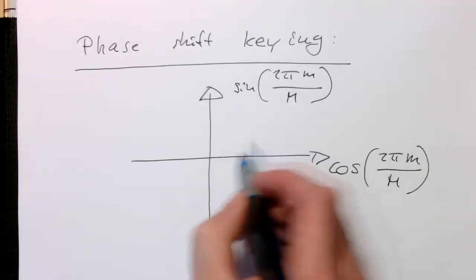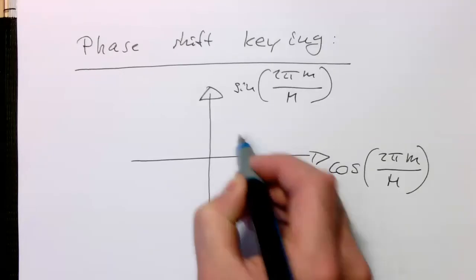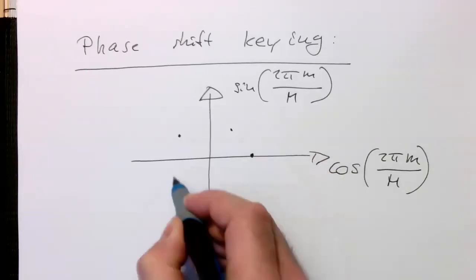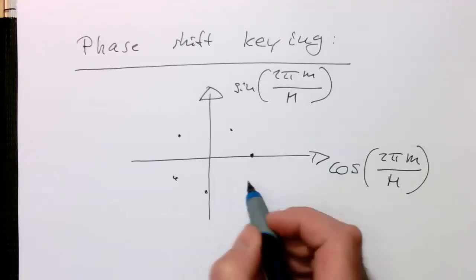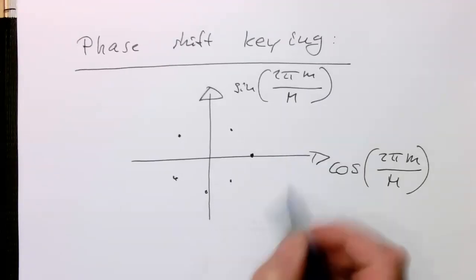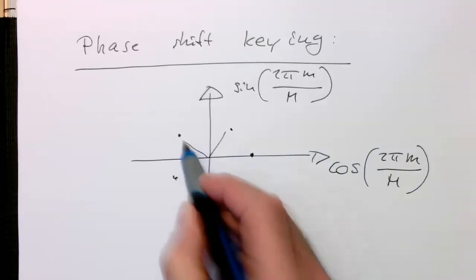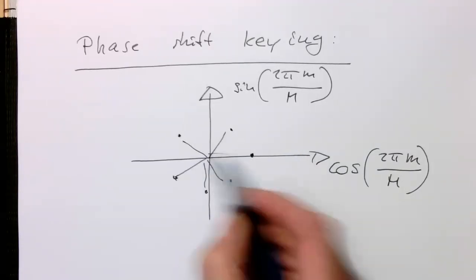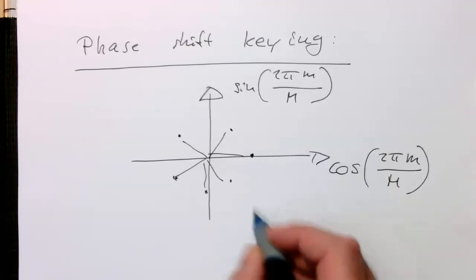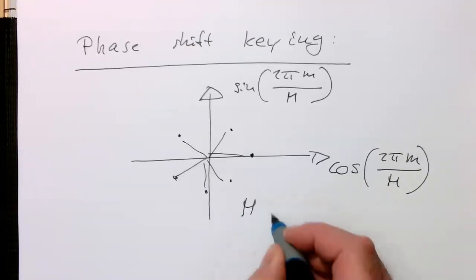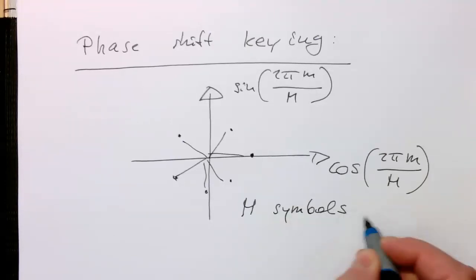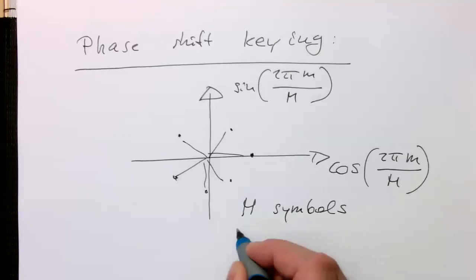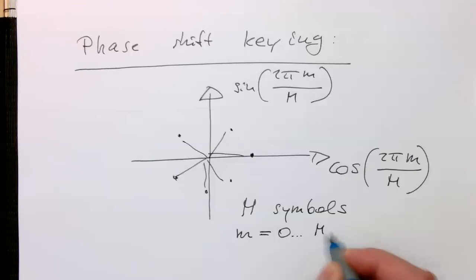Then we just define different angles here. For example, we start here, here, here, here, here, and here. This doesn't look very evenly divided here, maybe there's another angle. We're creating m symbols, where m is running from zero to M minus one.